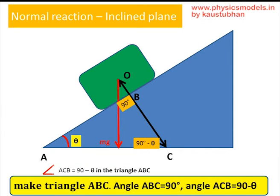The second step is: since the block pushes on the plane and the plane pushes back on the block, draw a line perpendicular to the incline, which becomes OC. Therefore, angle ACO becomes 90 minus theta because the angle at B is 90 degrees, so 90 plus (90 minus theta) plus theta will sum up to 180 degrees.